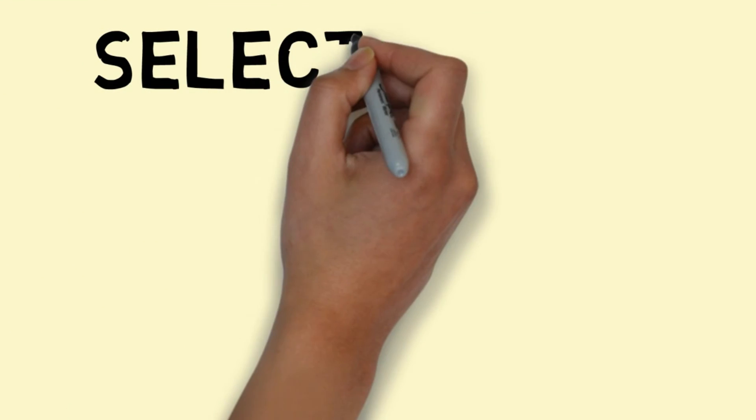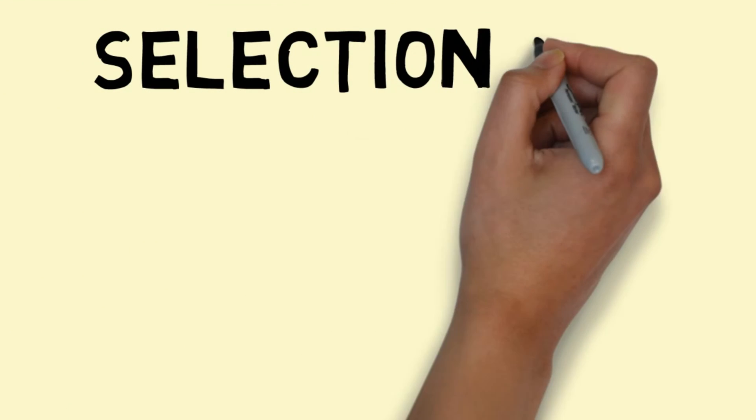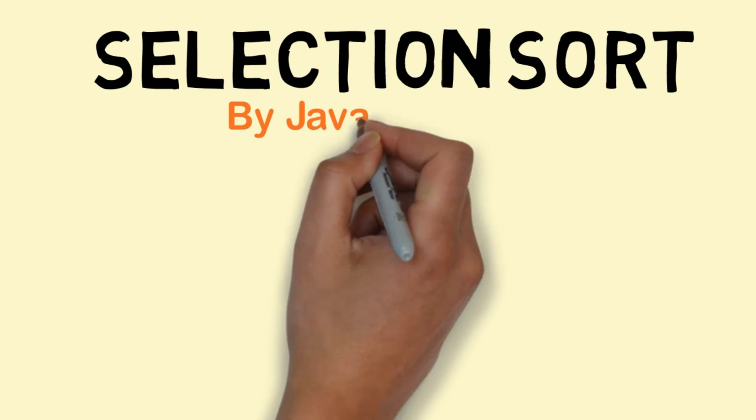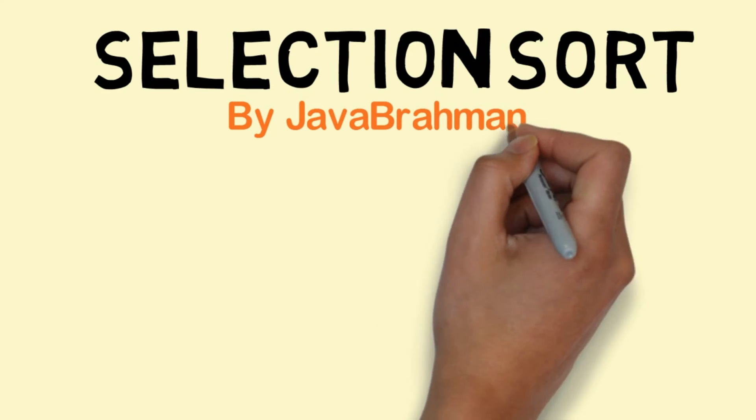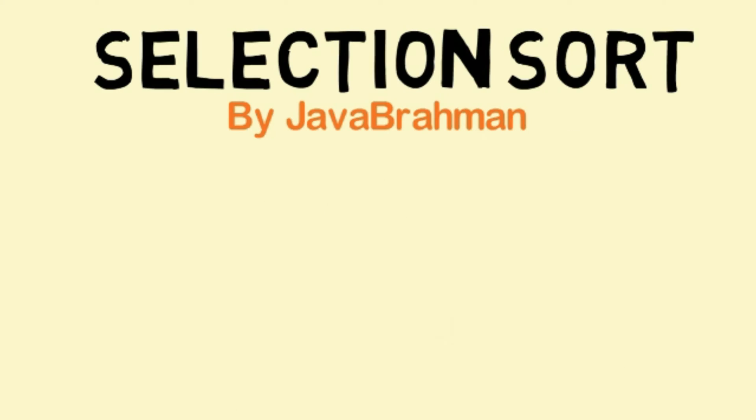In this video we will be looking at the selection sort algorithm and how it works. Our focus will be on understanding how exactly the algorithm successively finds the next smallest element and pushes it towards the front of the sorted list.